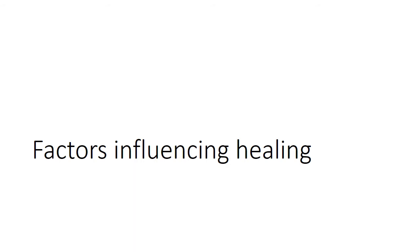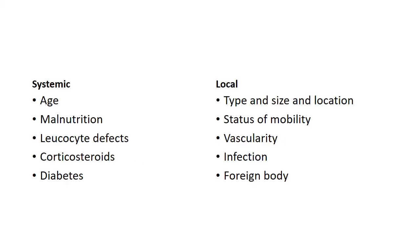That brings us to the factors which influence healing — not just fracture healing, but healing in general. These factors can be broadly classified into systemic and local factors. Systemic factors include age: healing is faster in young age and somewhat delayed in older age, due to poor blood supply as aging occurs. Another major factor is malnutrition; deficiency of factors like protein, vitamin C, vitamin A, or zinc delays wound healing.